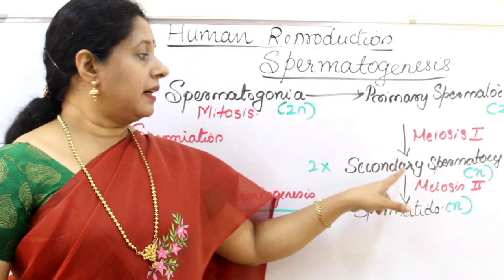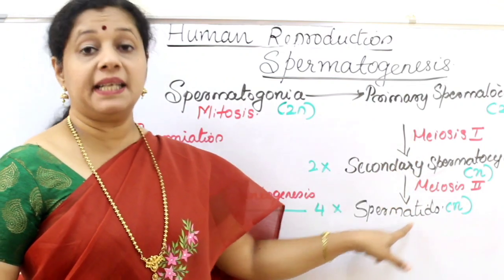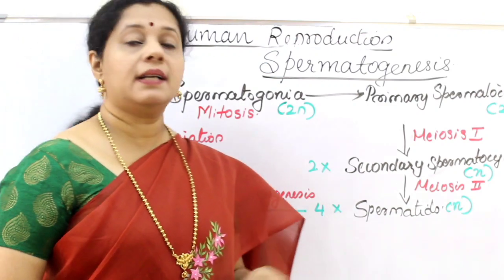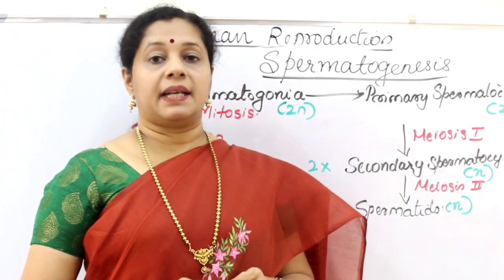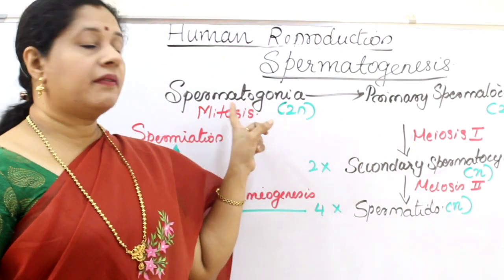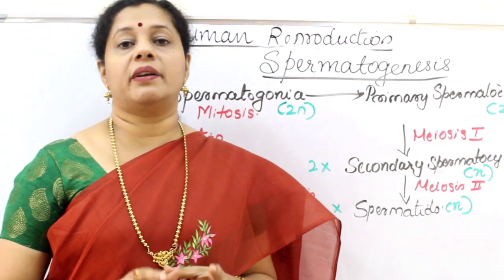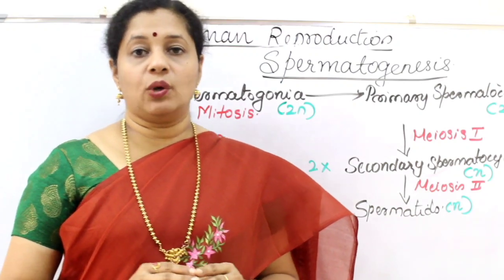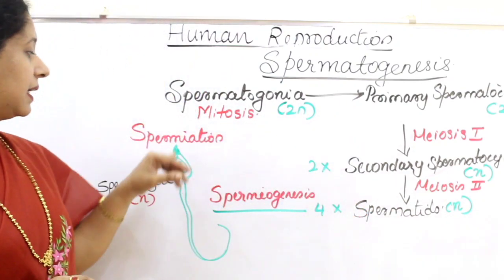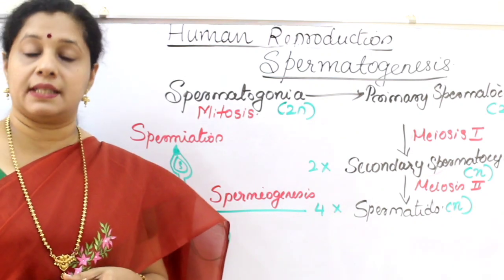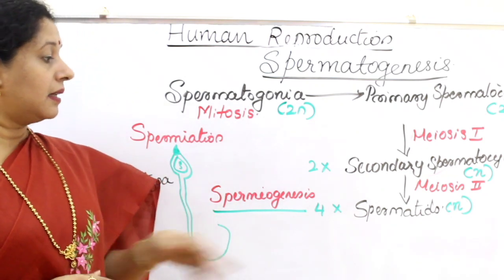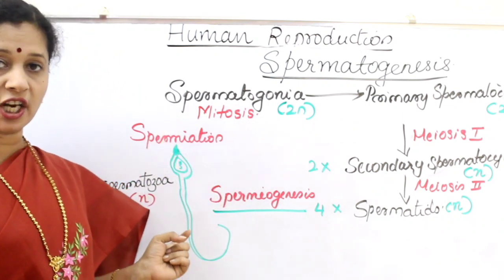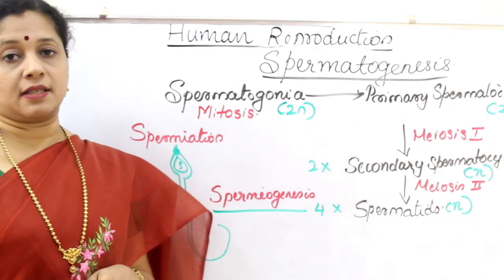The secondary spermatocyte will complete meiosis 2, and as a result four daughter cells are formed — those cells are called spermatids. Remember, it starts from spermatogonia, which are modified sperm mother cells, so these cells are like normal cells. But we know the sperm has a typical structure to enable its function, so the spermatids have to transform into this shape.